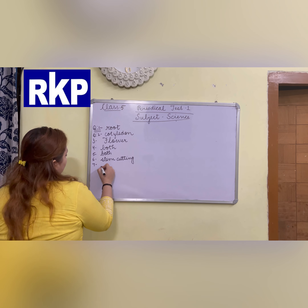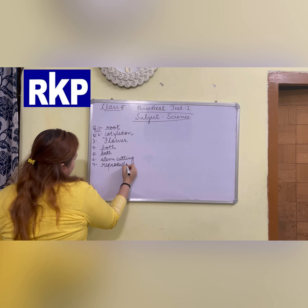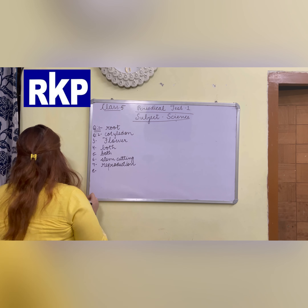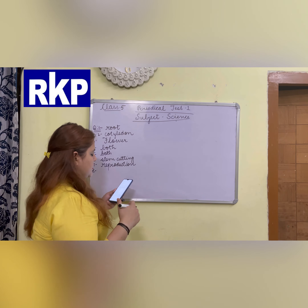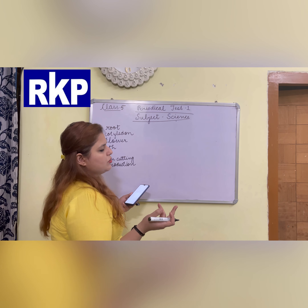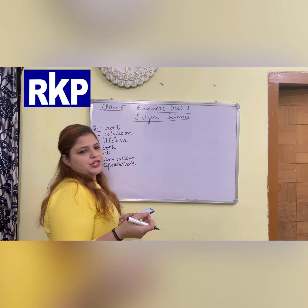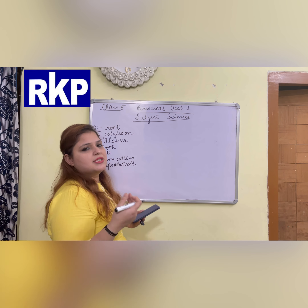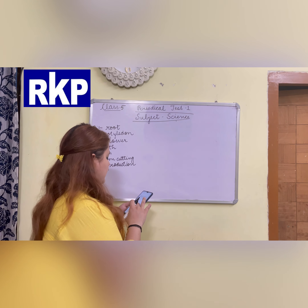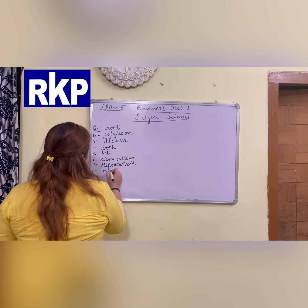We are using this word a lot — reproduce. So the process is called reproduction. Other options were photosynthesis, which is preparation of food by plants, and germination, which means development of a seed into a seedling.